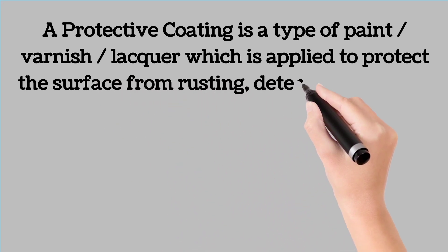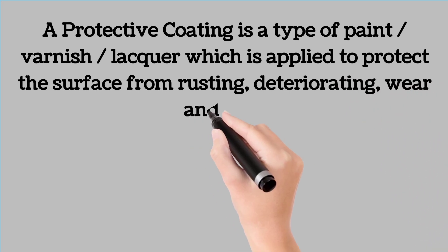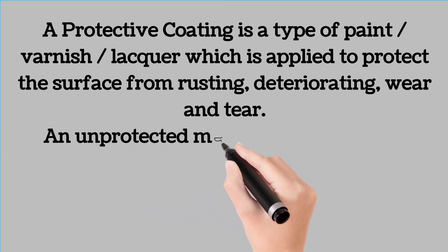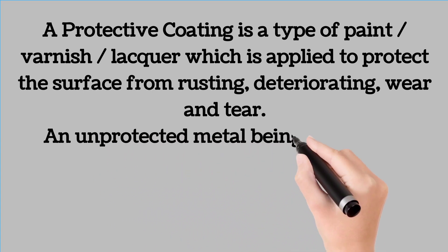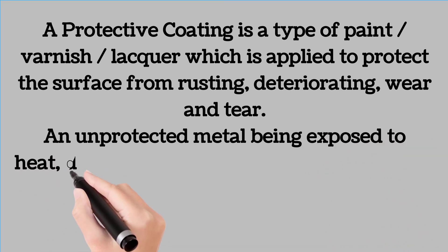Paint is a very common protective coating, but tar, pitch, bitumen and plastics are also used. An unprotected metal will rust and corrode due to environmental exposure. By coating the metal, an extra layer of protection is provided.